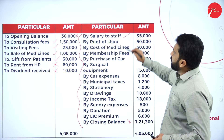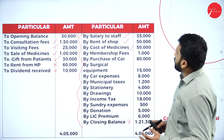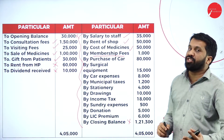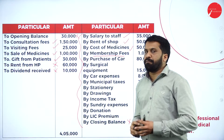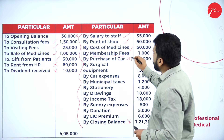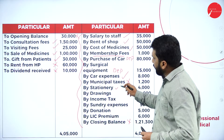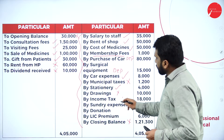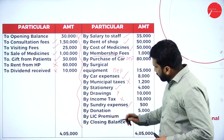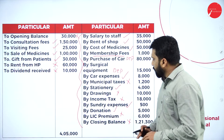Going through the expenses: salary to staff — yes; rent — yes; cost of medicine — yes. Membership fees: we have to check. If the membership fees are paid for your medical association, it is part of your profession. If paid for any club, it is not part of your profession. Purchase of car — only depreciation; surgical equipment — only depreciation; car expenses — yes. Municipal tax is personal. Stationary is part of your profession. Drawings — personal. Income tax — personal. Sundry expenses are small expenses. Donation: check whether given for medical purpose or other purpose. LIC is personal. Closing we will not take.